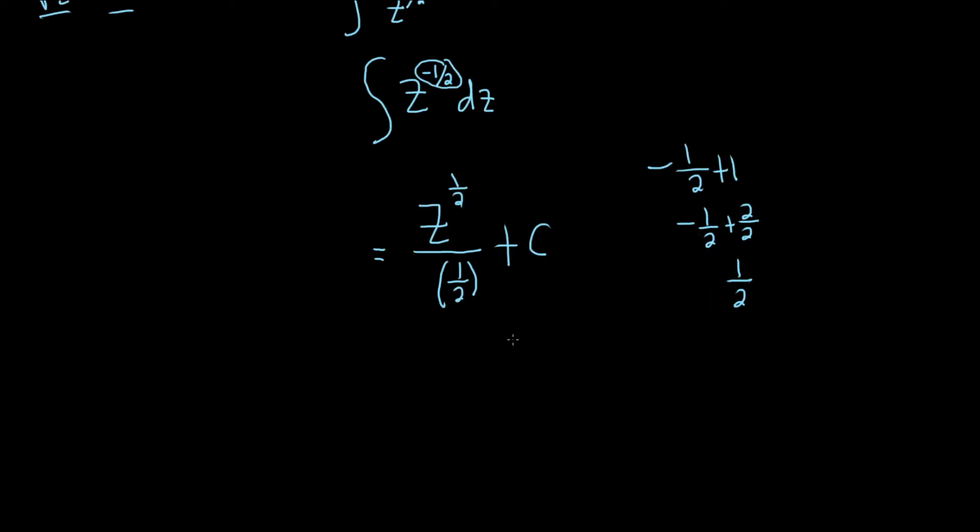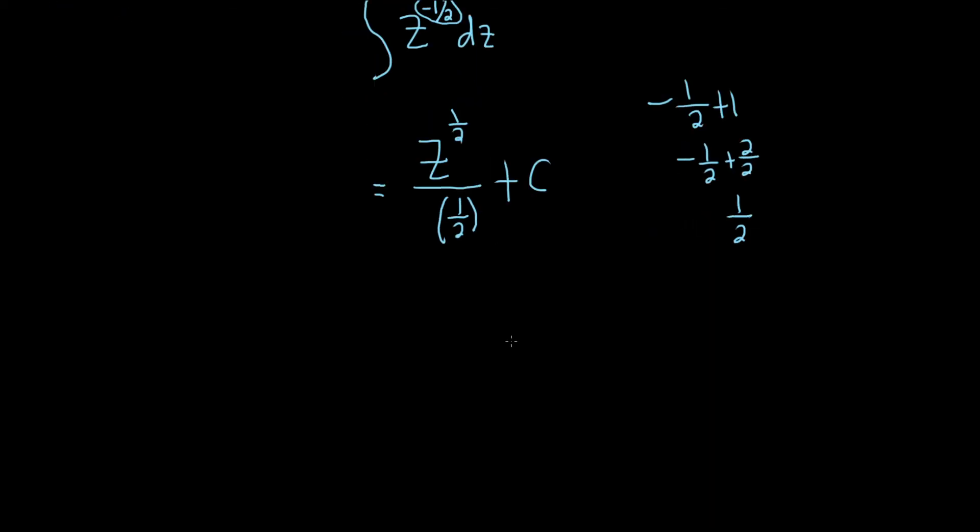The last step is to maybe clean this up just a little bit. So whenever you divide by 1 half, you really multiply by the reciprocal of 1 half. So the reciprocal of 1 half is 2. So this is really 2 times the square root of z plus our constant c. And that would be the final answer.